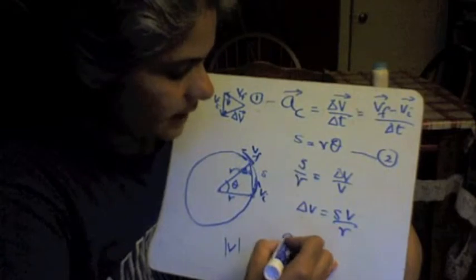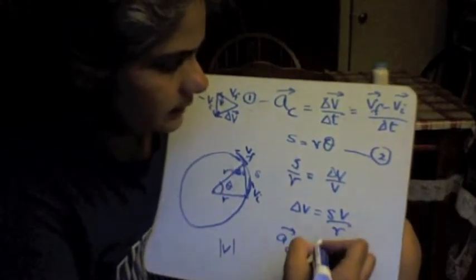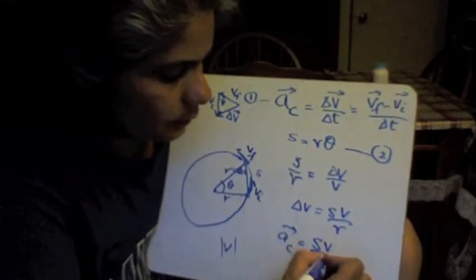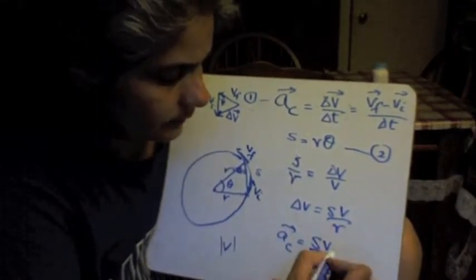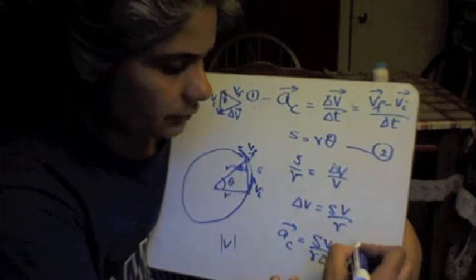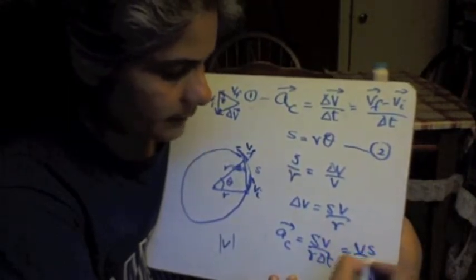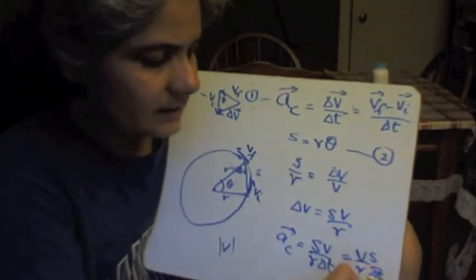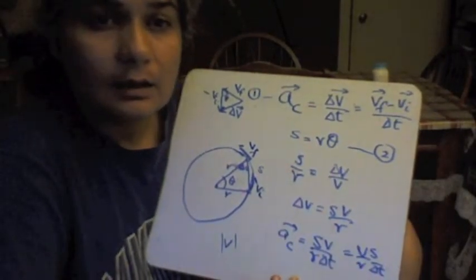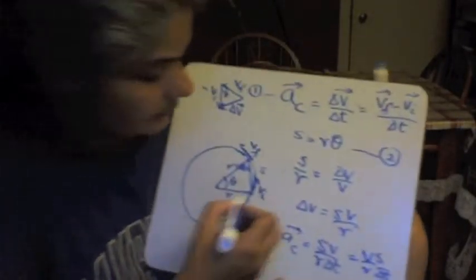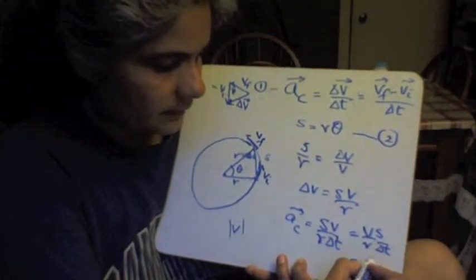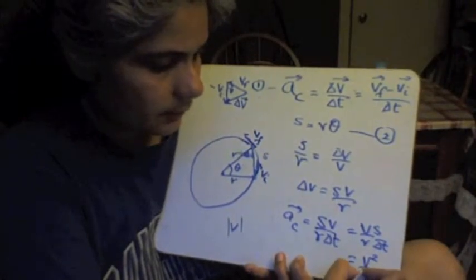So I have AC equals delta V over delta T, and delta V is this, so I'll write this S V over R delta T. I'm going to just rearrange that in this fashion. So what is S over delta T? It's nothing but the velocity, again, it's the distance over time, which gives us V squared over R.